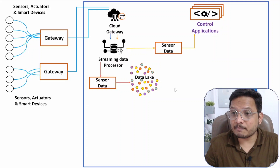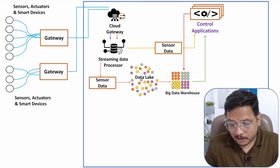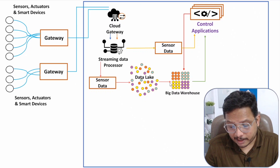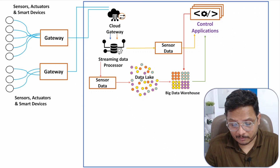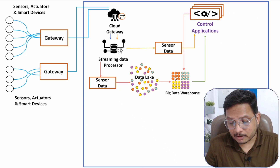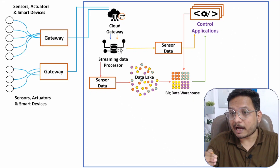The big data warehouse takes input from the data lake. Before storing data, it performs data filtering and processing, so what gets stored is structured data. This structured data is then provided to control applications, and the big data warehouse delivers meaningful insights based on commands from those applications.